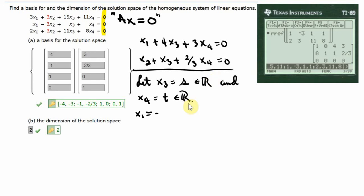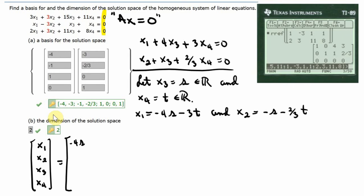So X₁ equals negative 4S minus 3T. For X₂, solving the second equation in terms of S and T, I get negative S minus two-thirds T. I'll write the solution set: X₁, X₂, X₃, X₄. X₁ is negative 4S minus 3T, X₂ is negative S minus two-thirds T, X₃ is S, and X₄ is T.